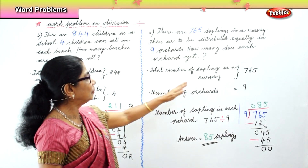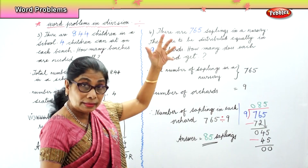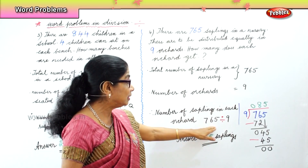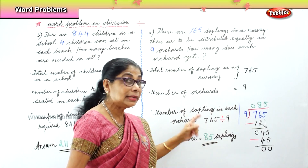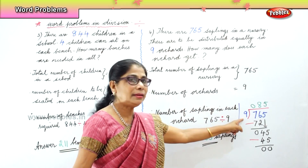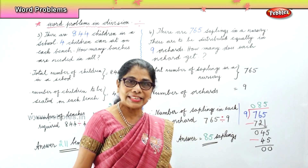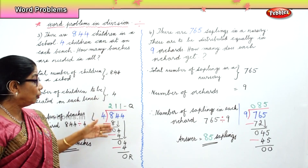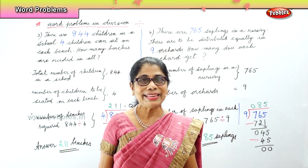So total number of saplings: seven hundred and sixty-five in the nursery. Number of orchards: nine to be distributed equally. Number of saplings in each orchard: seven sixty-five divided by nine. The answer is eighty-five saplings each orchard will get. Eighty-five into nine gives the dividend seven six five. What did we learn today? Word problems in division and how to do long division — that's what we learned today.